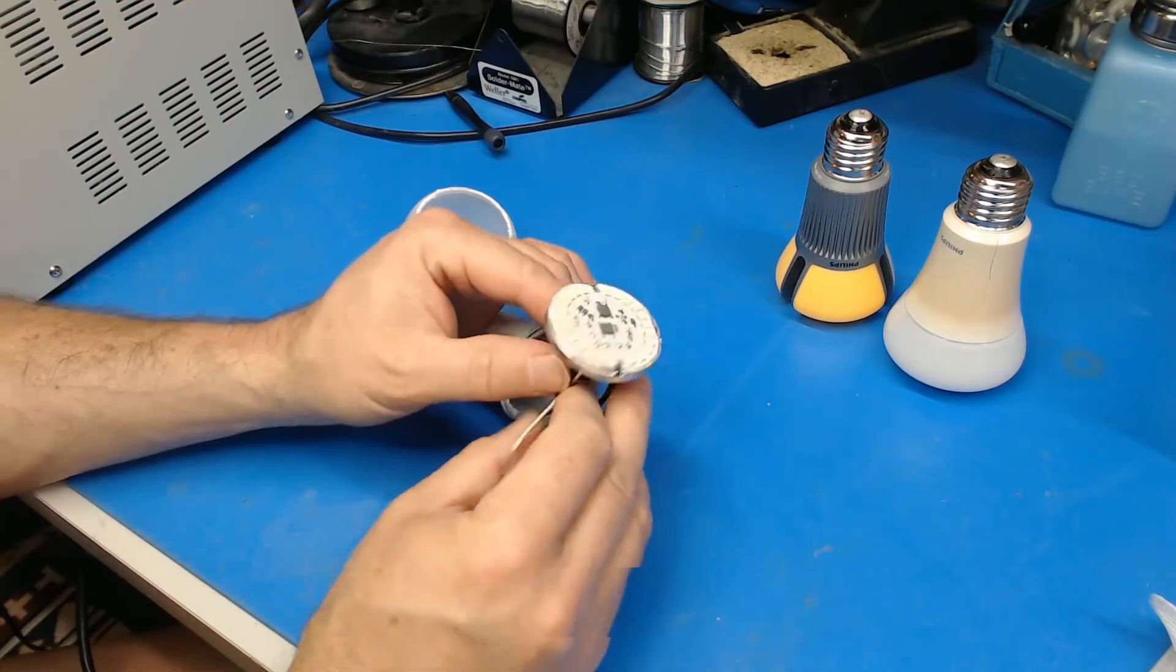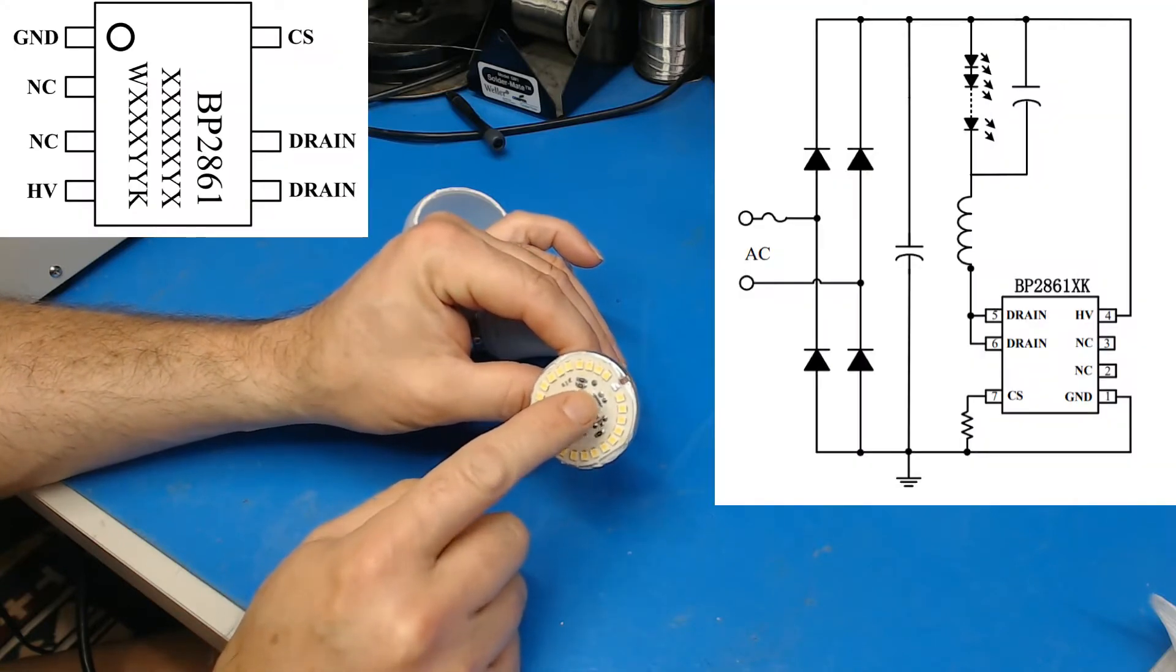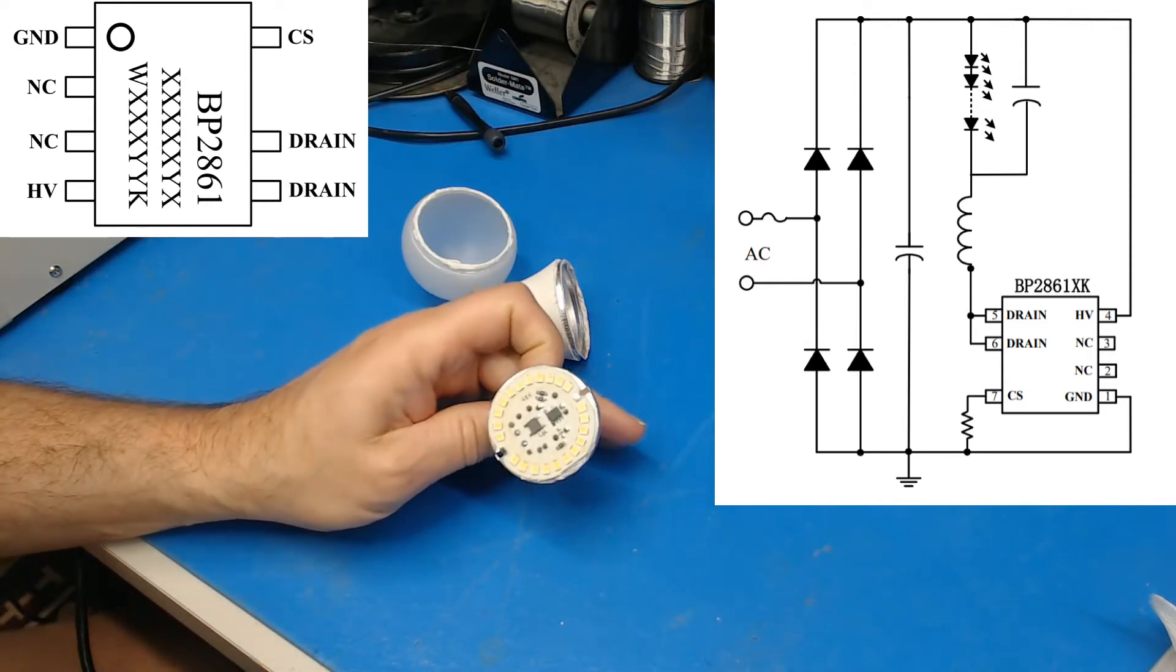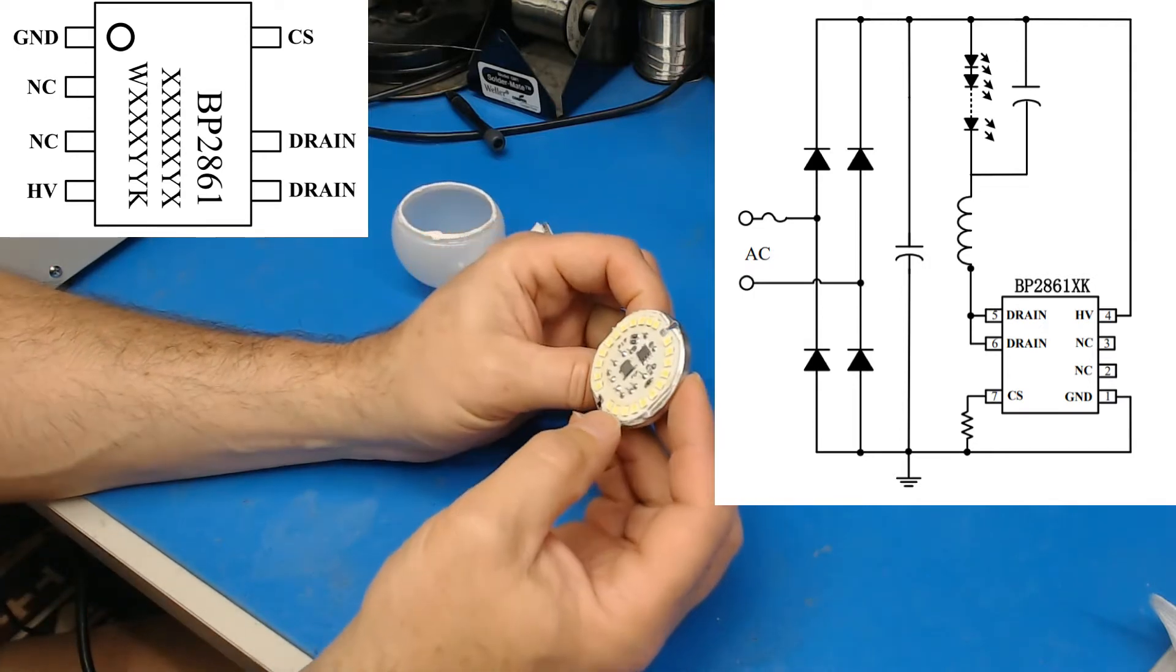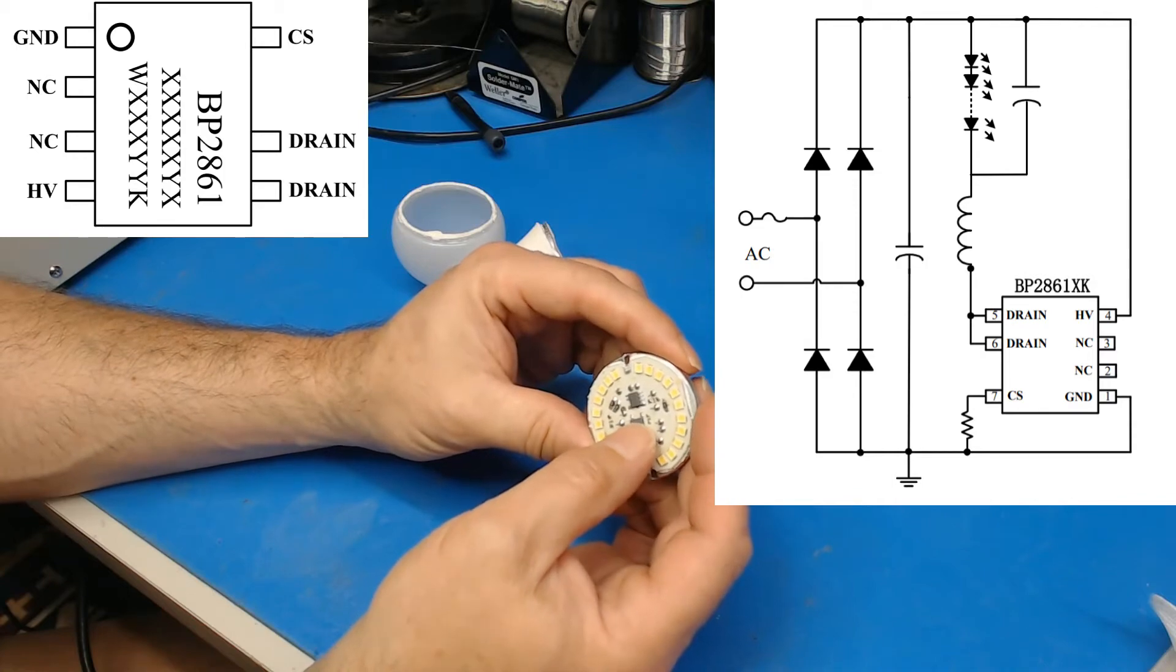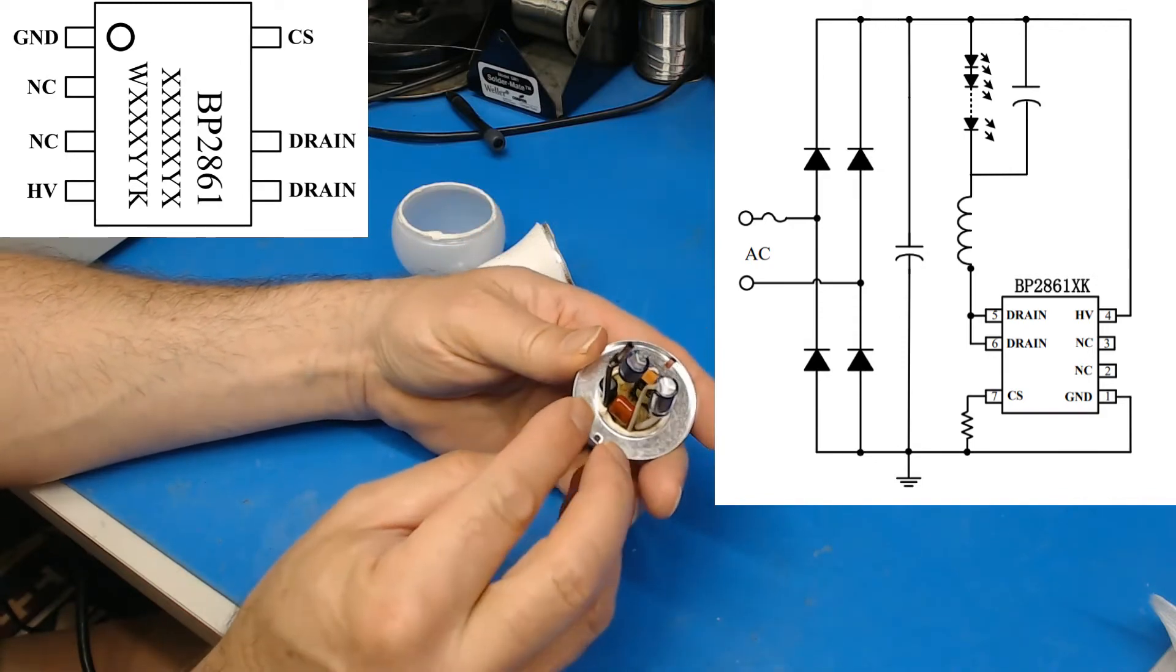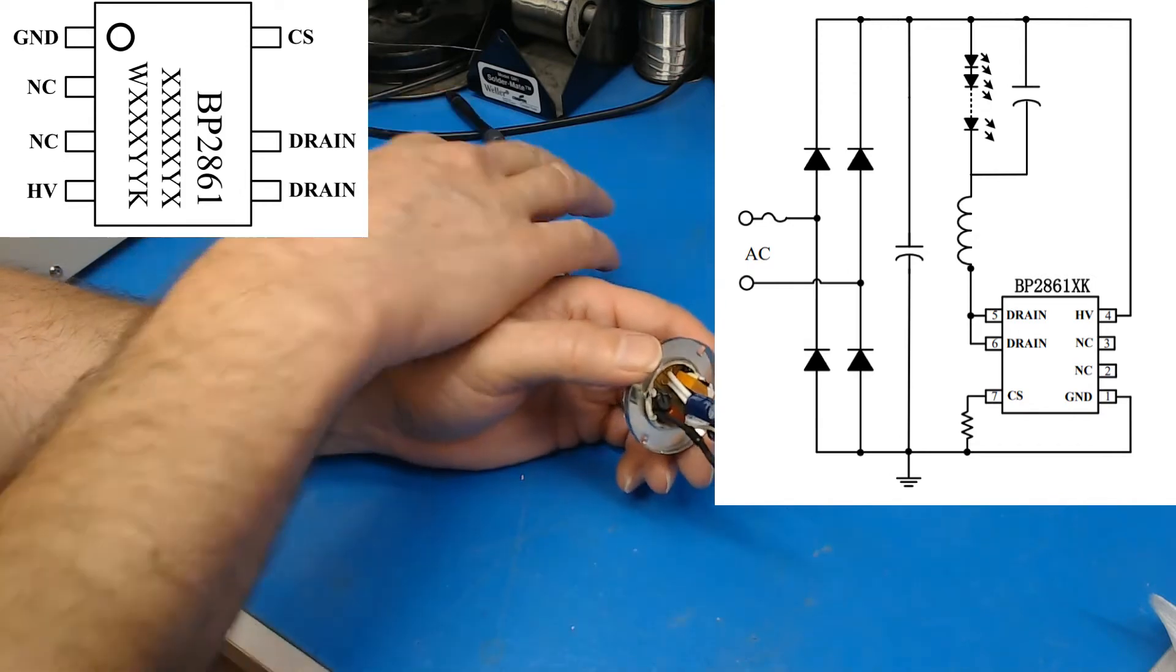So what we have is an IC that is the LED controller. Keep forgetting the name of it—so it's a BP2861. You've got the rectifier, so it's a single full bridge rectifier. You've got the inductor, you've got the caps, there's an EMI filter here. I think this is an inline fuse, so this would go to the hot, which is the very bottom guy there.